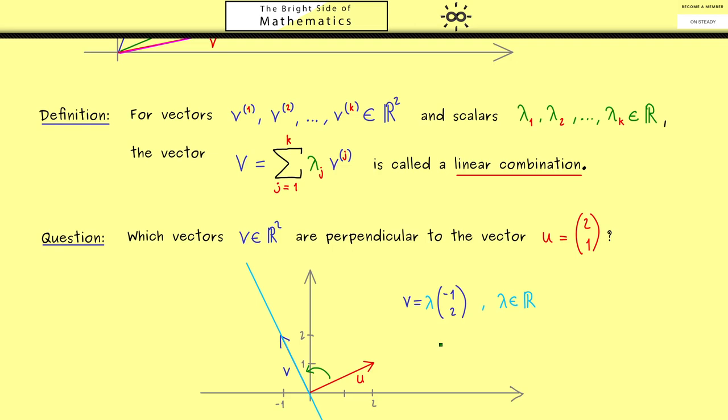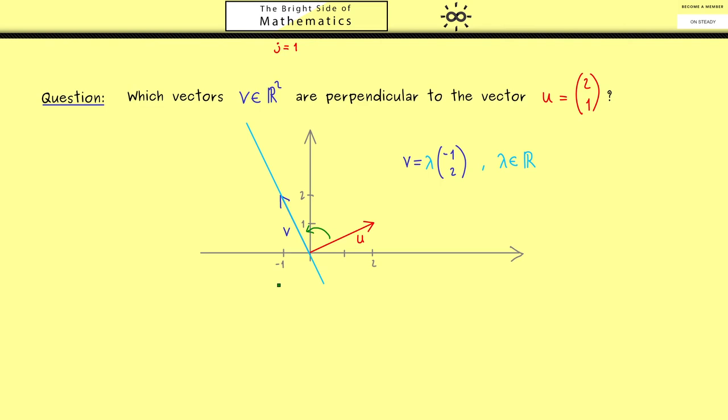However it's possible to reformulate the answer of the question here in a better way such that we can use it later. Indeed this will lead us to the so-called inner product. First let's fix two general vectors u and v. So u is (u1, u2) and v is (v1, v2).